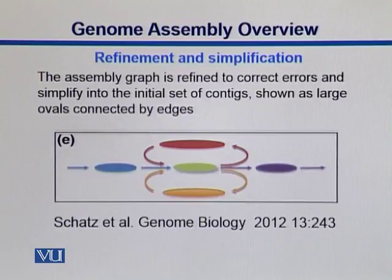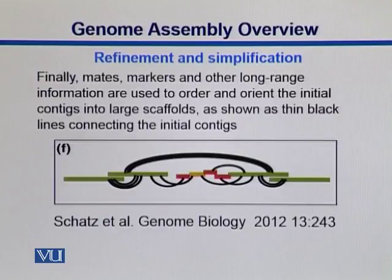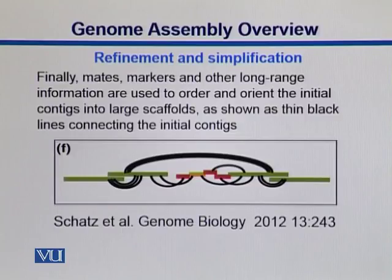After that graph is refined, we put those overlapping nodes together into contigs. We can come up with an initial set of contigs, and from those contigs we can find our scaffolds. We do have some markers on those scaffolds or on those contigs — there are some sequences which we call markers. They guide us in how we put these scaffolds in order. With the help of these markers and with the help of these mates, we kind of refine and simplify our assemblies.